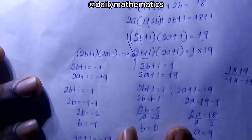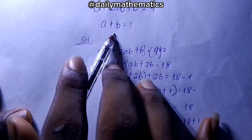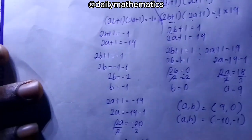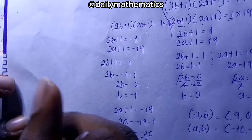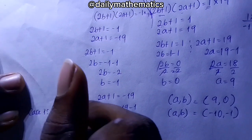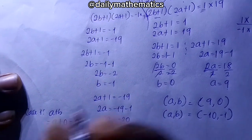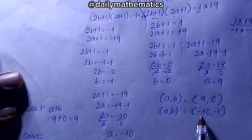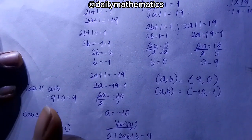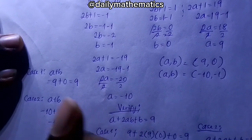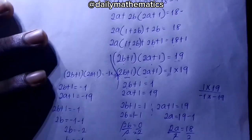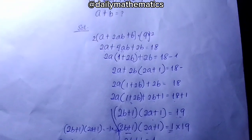Our original question asks us to find a plus b. For Case 1, a plus b equals 9 plus 0 equals 9. For Case 2, a plus b equals minus 10 plus (minus 1) equals minus 11. So our two answers are a plus b equals 9, and a plus b equals minus 11. That brings us to the end of this question. Feel free to ask your questions, and don't forget to subscribe and like the video. Thank you.